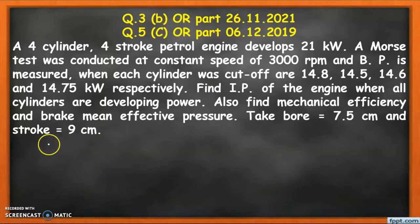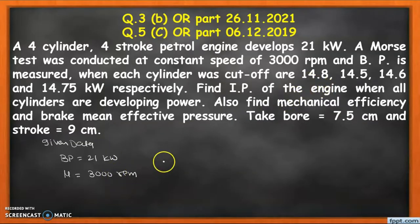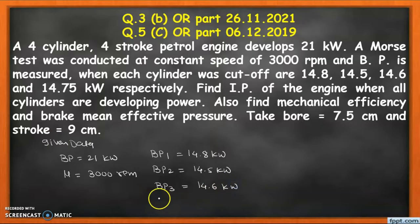First, we write down the given data. Brake power is 21 kilowatt. RPM of the engine is 3000 rpm. The brake power developed when each cylinder is cut off: BP1 (cylinder one cut off) is 14.8 kilowatt, BP2 is 14.5 kilowatt, BP3 (cylinder three cut off) is 14.6 kilowatt, and BP4 (cylinder four cut off) is 14.75 kilowatt.